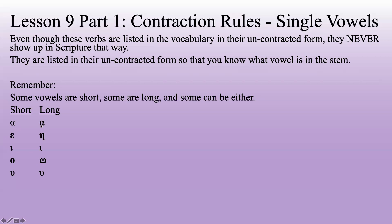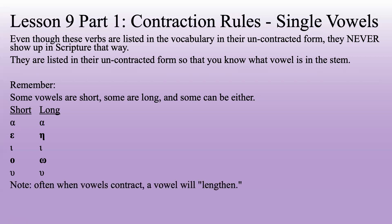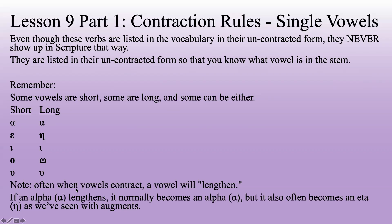For an English speaker you may be tempted to pair eta with alpha, but it goes with epsilon. When vowels contract, a vowel will often lengthen — that is why we need to know which vowels correspond to which ones. If an alpha lengthens, it normally becomes an alpha, but it also often becomes an eta, as we've seen with augments. Just watch out for that. Alphas are more closely related to epsilons and etas than any other vowels are to each other, so we'll make good note of that as we see it.